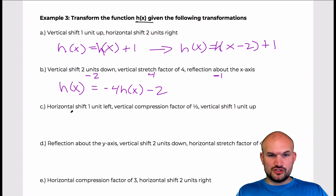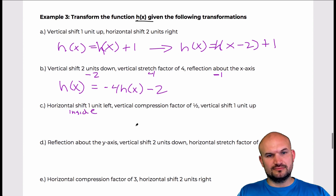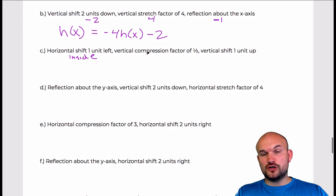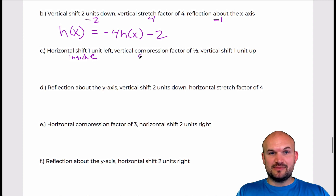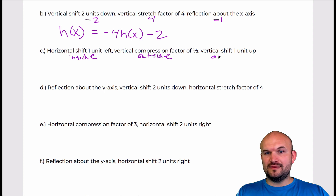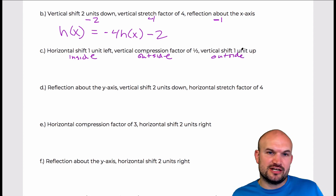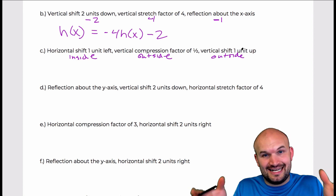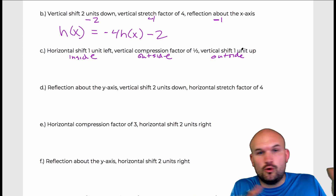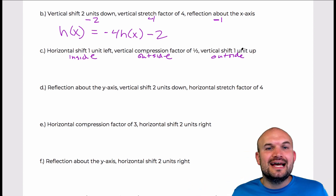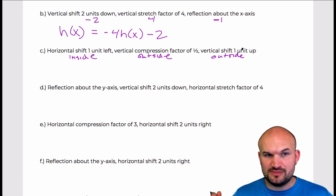For the next one, I have a horizontal shift left, so that means that's going to be inside the function. A vertical compression — that's going to be outside. And a vertical shift up 1 — that's going to be outside. It's really important to know the difference: is your transformation inside or outside? Anything that's happening horizontally is going to be inside. Anything that's happening vertically is going to be outside.